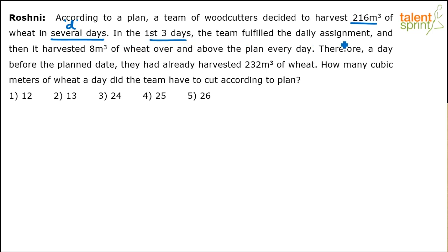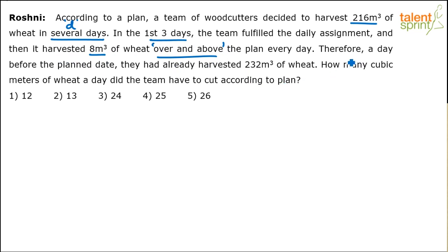In the first three days, the team fulfilled the daily assignment — which means they worked with the right capacity. After that, they harvested 8 cubic meters of wheat over and above the plan every day. They had a plan to harvest some quantity of wheat every day: 216 cubic meters overall in d days. For the first three days they worked accordingly, but after that they increased their capacity — 8 cubic meters of extra harvesting every day.